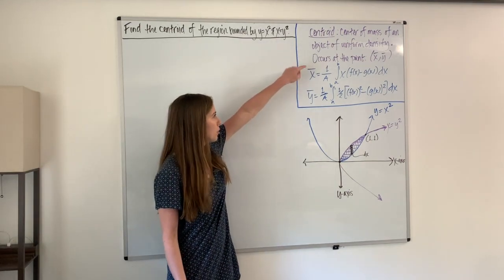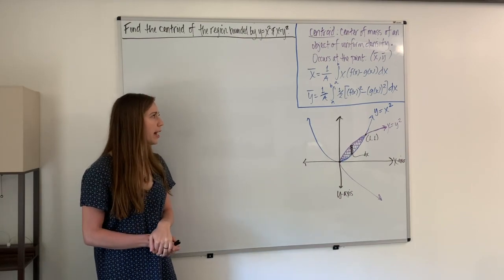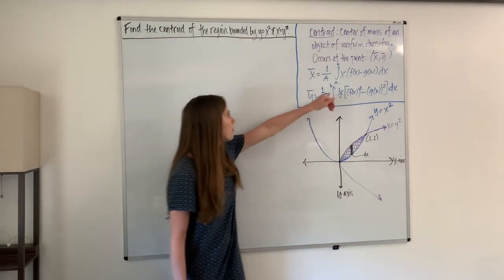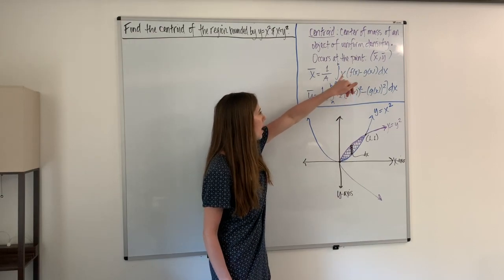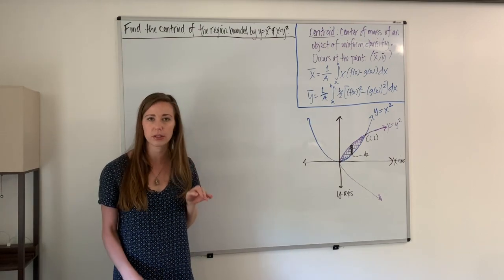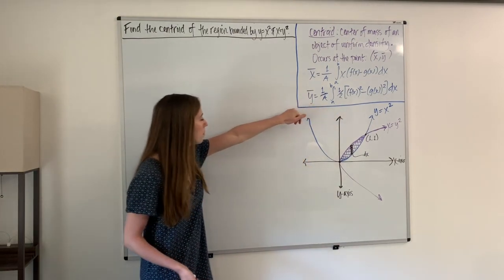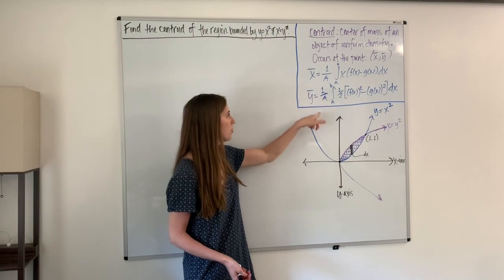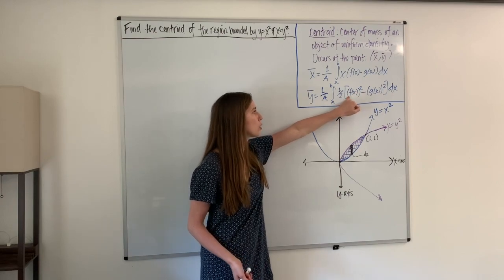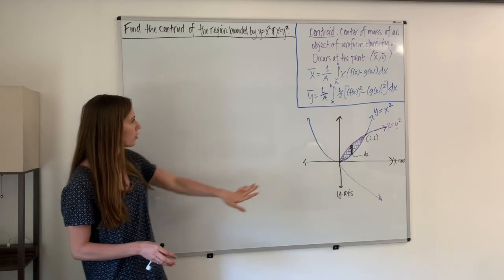The centroid occurs at the point (x̄, ȳ). The formula for x̄ is one over the area times the integral from a to b of x times [f(x) minus g(x)] dx, where f(x) and g(x) label the two curves. And ȳ equals one over the area times the integral from a to b of one-half times [f(x) squared minus g(x) squared] dx.